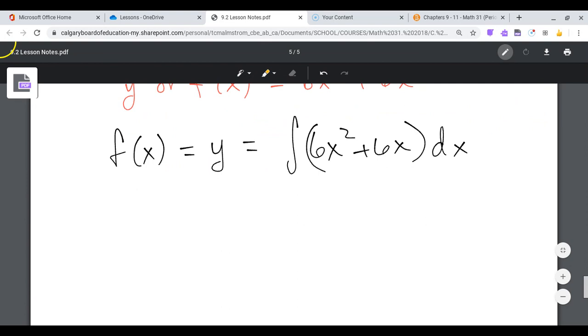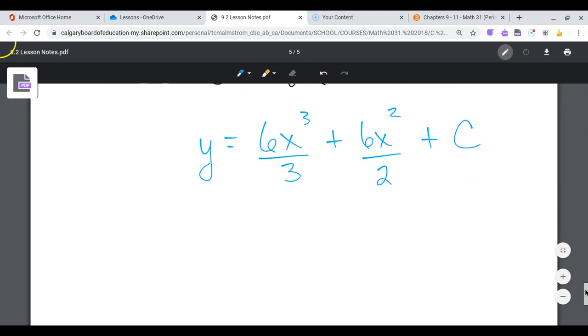Okay, so let's take the antiderivative of this. So y will be equal to 6x cubed divided by 3 plus 6x squared divided by 2 plus some constant c. And that would tidy up to y is equal to 2x cubed plus 3x squared plus c.